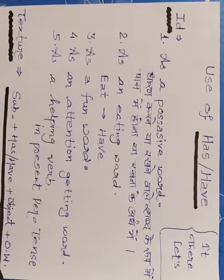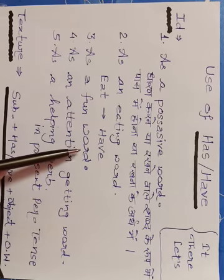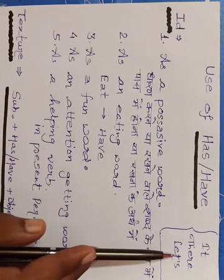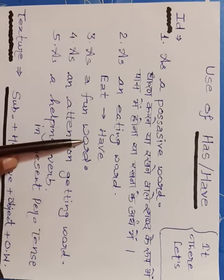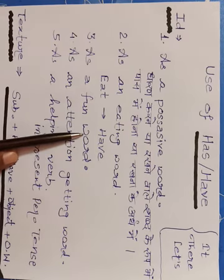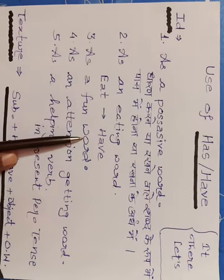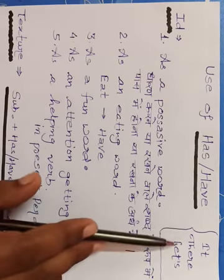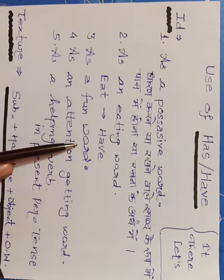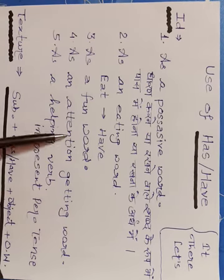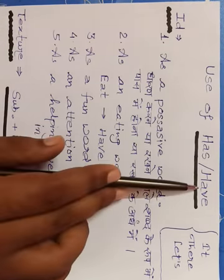Next, third one: as a fun word. Have ka use karte hain kisi process ko karne ki roop mein. Jaise chaliye musti karte hain, enjoy karte hain — to bolenge: Let's have fun. Koi baar hum bolte hain — chaliye party karte hain — toh party karna, fun karna hota hai — toh: Let's have a party. Party celebrate karte hain, enjoy karte hain — so: Let's have a party.